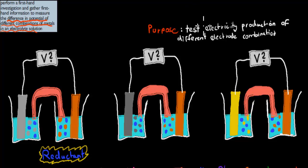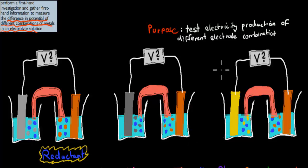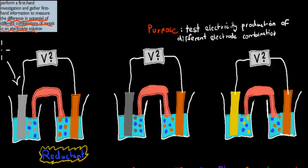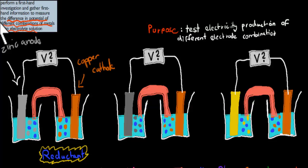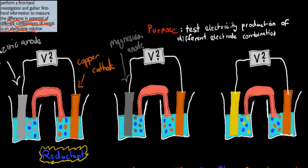So I'll explain what the purpose is. The purpose is to test the electricity production of different electrode combinations. You might have set up three different types of galvanic cells. In one, you would have had Zinc and Copper — so this here is your Zinc anode and on the other side is your Copper cathode. In another, this is supposed to be Magnesium — so Magnesium anode, and again your Copper cathode.